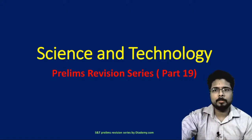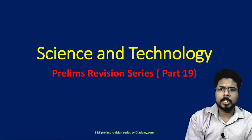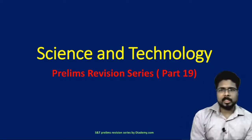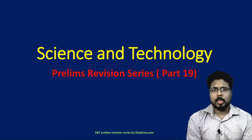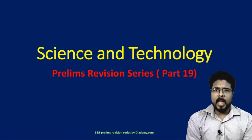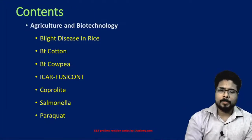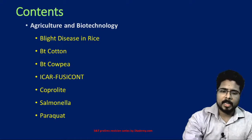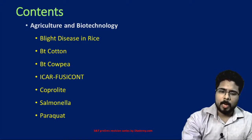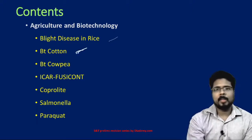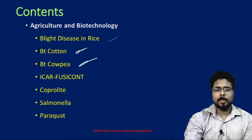Let's continue with our revision series from science and technology. In this lecture we start with agriculture and biotechnology. We'll first cover the blight disease in rice, then talk about BT cotton, and after that BT cowpea.